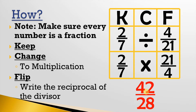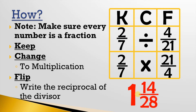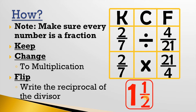This fraction is improper, so I'm going to make my final answer a mixed number. When we do that, we get 1 and 14 over 28. But this 14 over 28 can be reduced — I can divide both the top and bottom by 14, which means 14 over 28 becomes 1 half. Therefore, our final answer is 1 and 1 half.